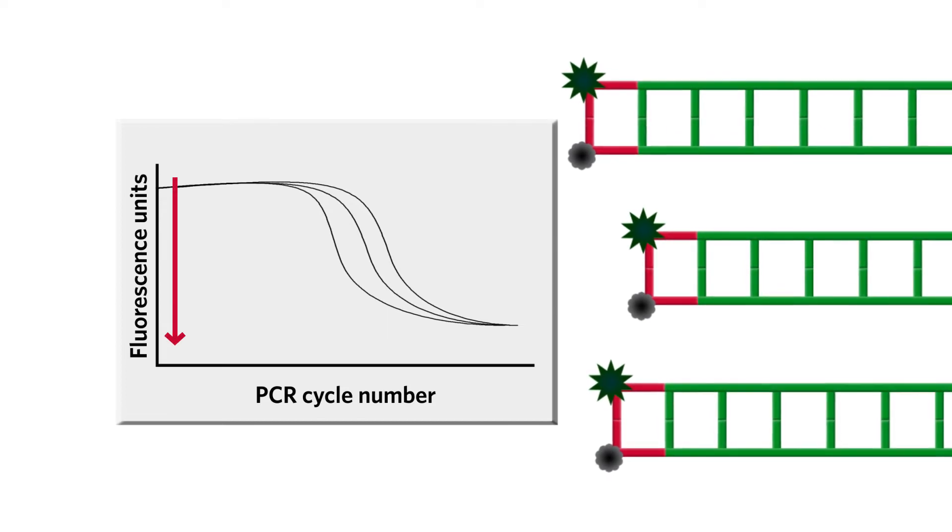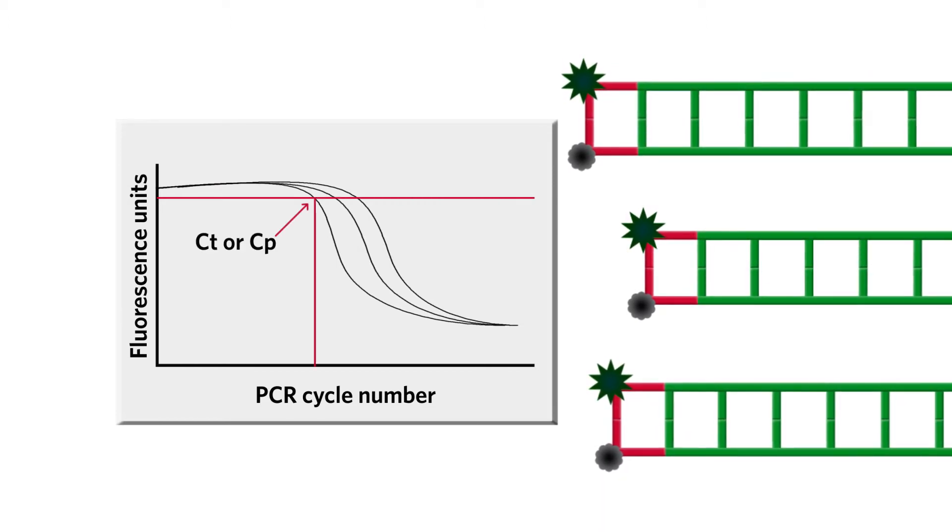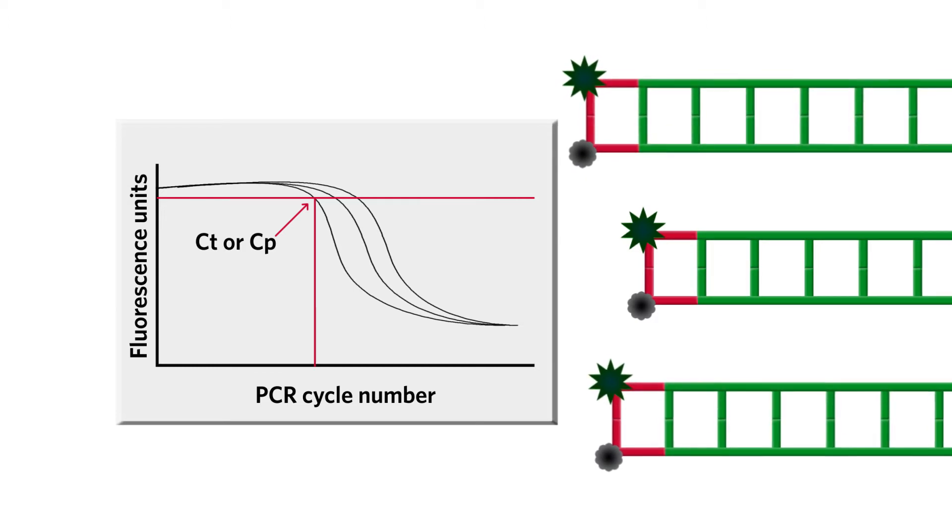This graph shows the decrease in fluorescence. CP, crossing point, or CT, cycle threshold, is the point at which fluorescence decrease is statistically significant.